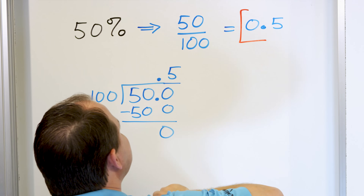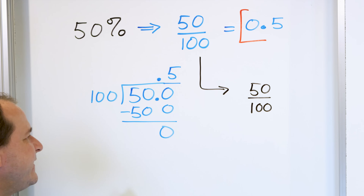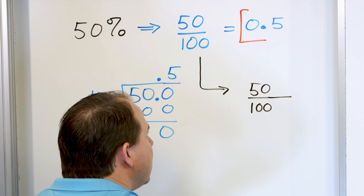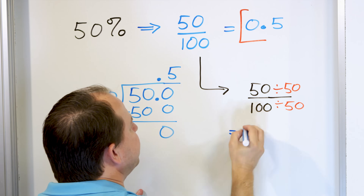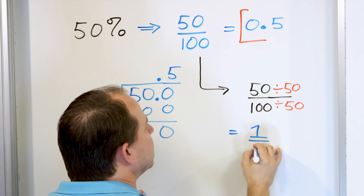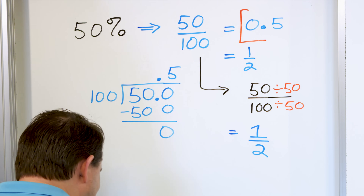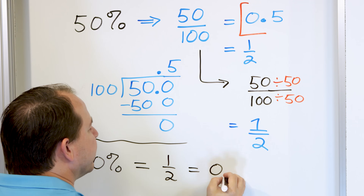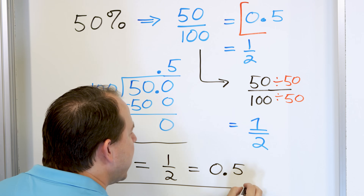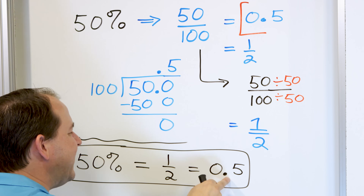Now let's look at the fraction one more time. We have 50 over 100 as a fraction. I can simplify that — divide the top by 50 and the bottom by 50. 50 divided by 50 is 1, and 100 divided by 50 is 2, so I get 1 half. So putting it all together: 50% can be written as the fraction 1/2, and also as the decimal 0.5. All three are the same. Every single percentage can be converted to a fraction, which can also be converted to a decimal.